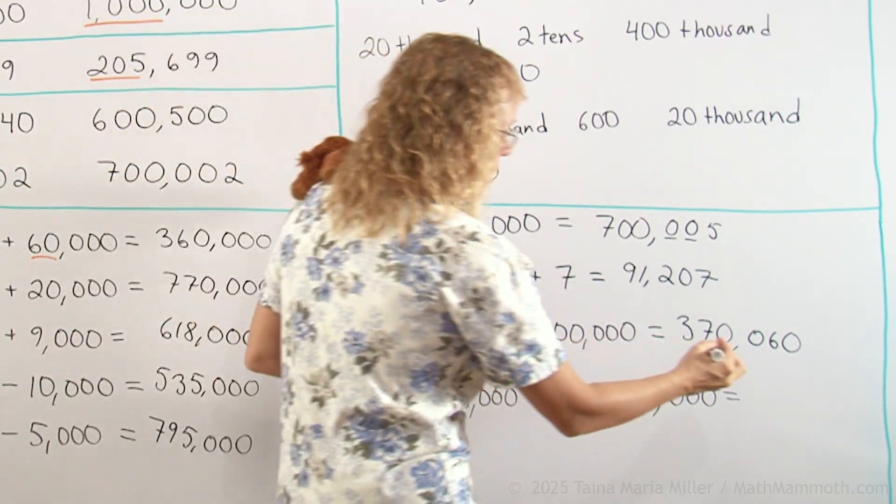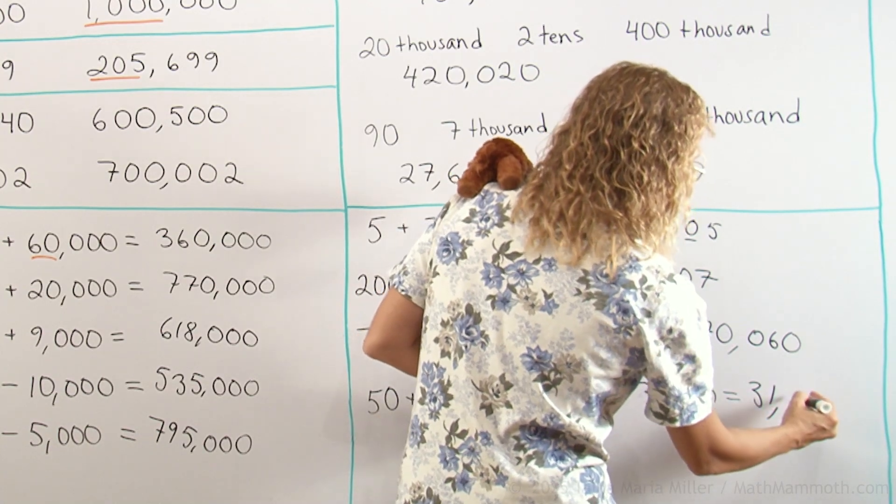Then there's five-hundred-fifty. Thirty-one-thousand, five-hundred-fifty.